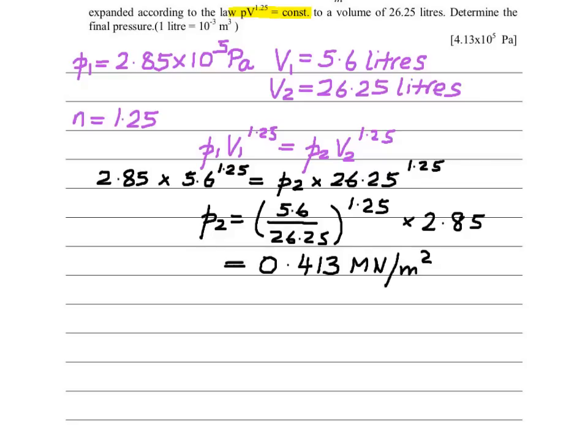As you can see, if we put in the calculator, we will get an answer of 0.413 mega newton per meter square.